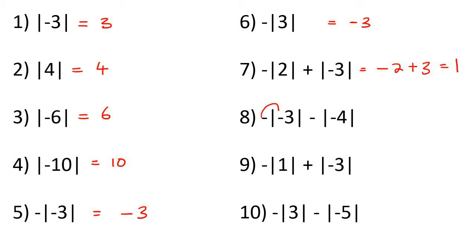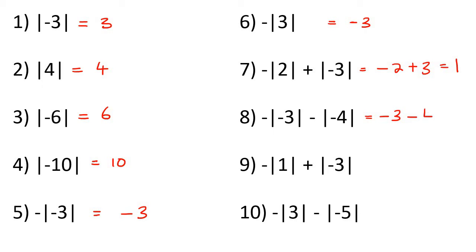For this next one, don't put the negative on the inside — you're not allowed to do that. Just write out the negative that's already there. Then the absolute value part becomes 3. Then we've got a minus, and then this minus 4 changes to a positive 4. So now we have minus 3 minus 4, which is minus 7.